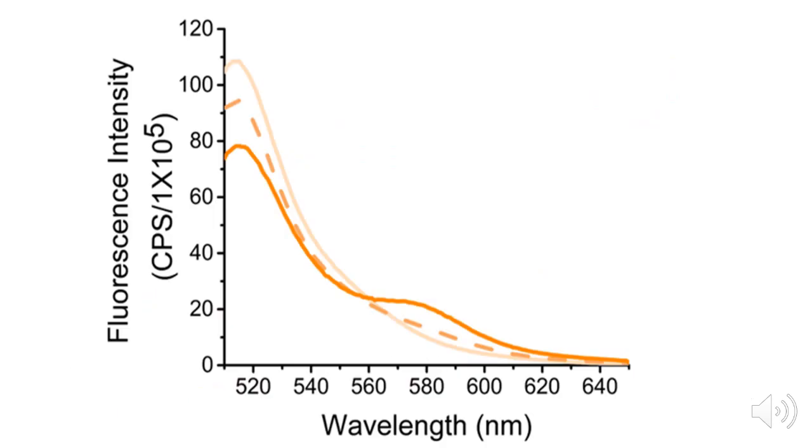In this case, the increase in energy transfer is shown by a decrease in donor fluorescence and an increase in acceptor fluorescence. The donor acceptor molecule with protein bound has the largest changes in fluorescence and the greatest increase in energy transfer.